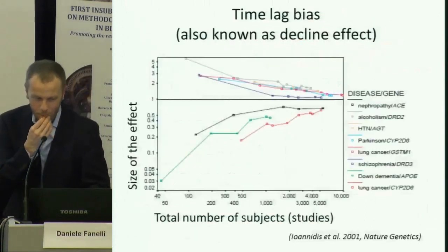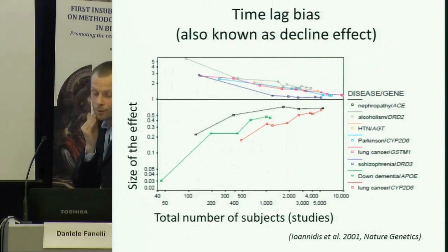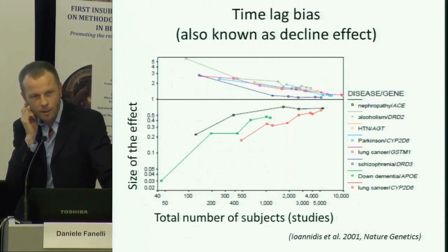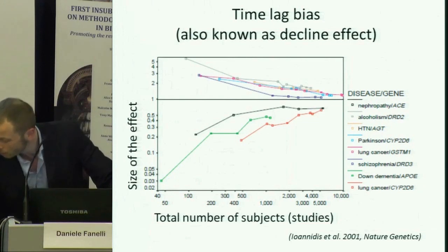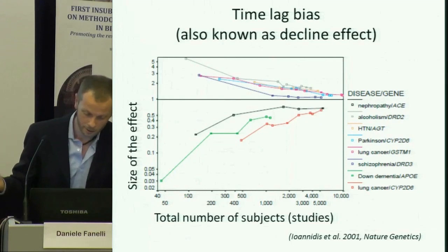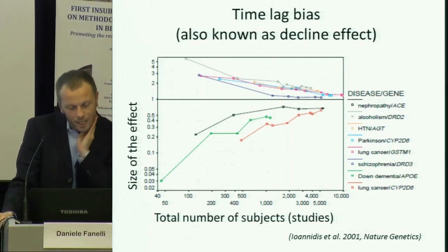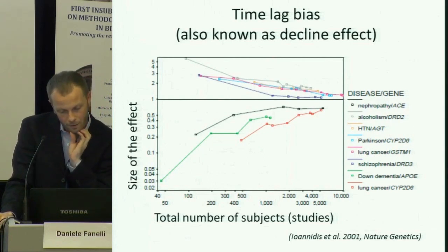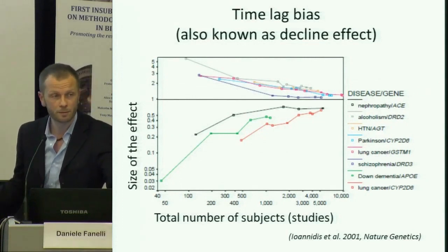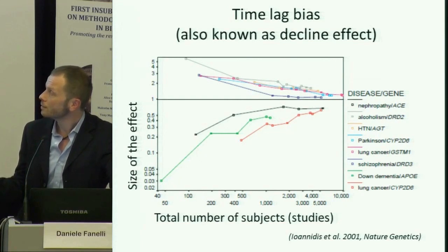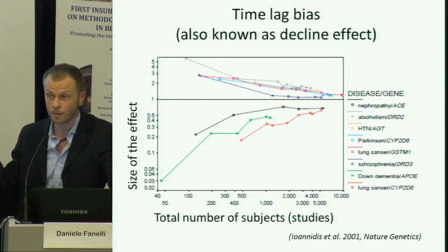Time lag bias. I knew this more as the 'decline effect' — at least there was a good article in the New Yorker about it who defined it this way. This is a phenomenon that, starting with areas of biomedical research — particularly genetic epidemiology, and certainly the work of John Ioannidis — has been revealed as being a very pervasive and very problematic phenomenon in which the first studies published about a specific subject report extremely strong effects, and then subsequent studies report progressively smaller effects or in some cases just null results.